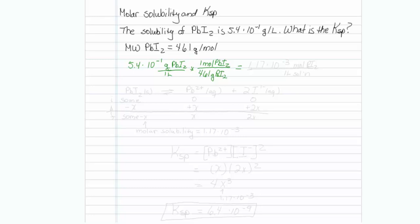0.54 divided by 461 gives me a concentration of 1.17 times 10 to the minus 3 moles of lead iodide per liter of solution. That's a better number for me to use.